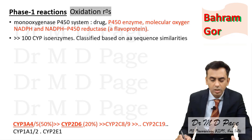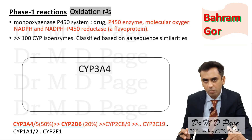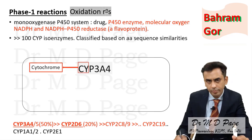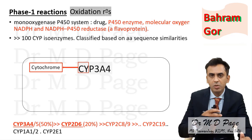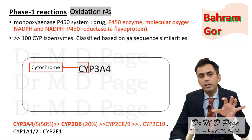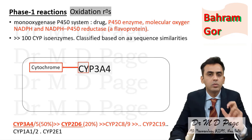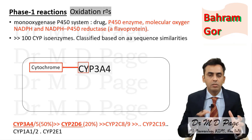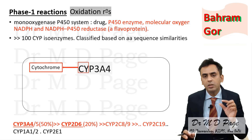Let's look at CYP enzyme nomenclature using CYP3A4 as an example, since it metabolizes 50% of drugs. CYP stands for cytochrome. P stands for P450. Microsomal enzymes are located in the smooth endoplasmic reticulum. When you take a cell and centrifuge it to separate its fragments, the smooth endoplasmic reticulum is very fragile and breaks into very small particles.